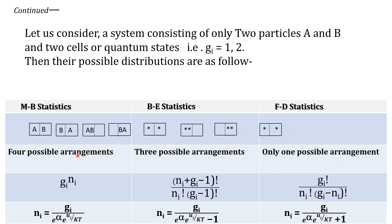Now how to calculate the number of possible arrangements under Maxwell-Boltzmann, Bose-Einstein and Fermi-Dirac statistics. For Maxwell-Boltzmann statistic, the number of possible arrangements is given by G_i raised to the power N_i. In the same example, G_i is 2 (two cells) and N_i is 2 (two particles), hence 2 squared equals 4, and we get four possible arrangements.